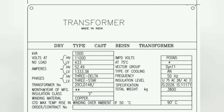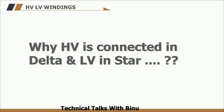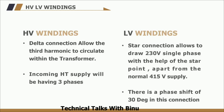Now coming back to the nameplate details, we are going to see the winding details. The HT windings are connected in delta and the LT windings are connected in star, and both windings are 3-phase. The delta winding on the HT side allows the third harmonic current to circulate within the transformer and prevents harmonics from going out into the system. Also, the HT supply runs on a 3-phase 11 kV system with no neutral or earth point, so a star point is not required. The secondary is wound in star, giving an output of 433 V between lines and a domestic supply voltage of 240 V between line and neutral. There is a phase shift of 30 degrees between the primary and secondary voltages.